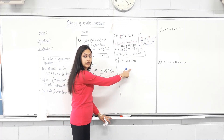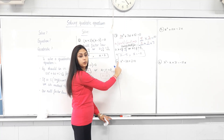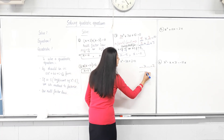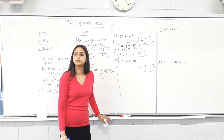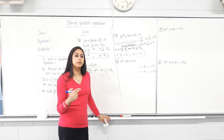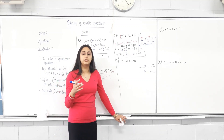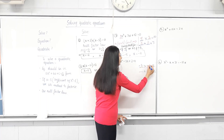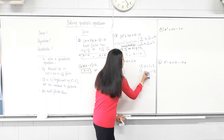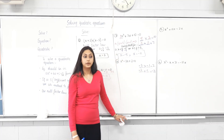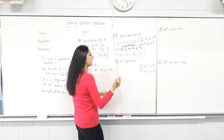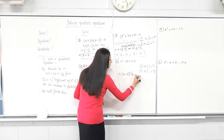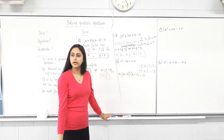Everything on one side, zero on the other? Yes. Coefficient of x squared is 1? Yes. Factorize using A-B method. Two numbers times to give you 2, and add to give you negative 3. When you add them you need a negative answer, but when you multiply you need a positive answer. How about negative 2 and negative 1? Negative 2 times negative 1 is positive 2, and negative 2 plus negative 1 is negative 3. So factorize as x minus 2 times x minus 1 equals 0.